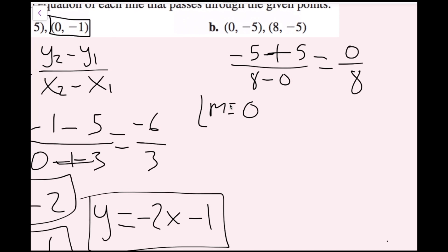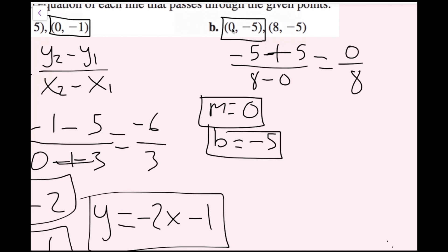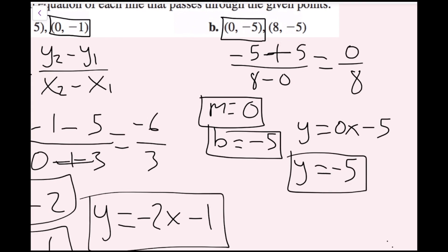I also see the point 0, negative 5 — my x value is 0, so my y-intercept is given to me. b equals negative 5. I could write y equals 0x minus 5, but since the slope is 0 and the y values are the same, I know this is a horizontal line. y equals negative 5 is the equation of our line in slope-intercept form.